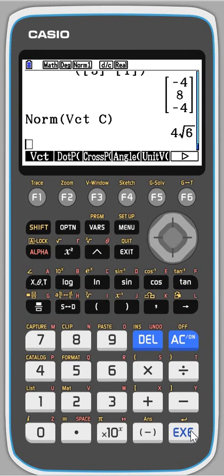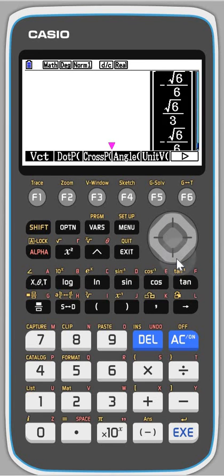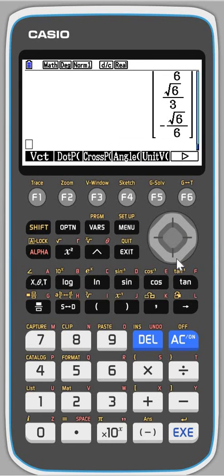You can get the angle between vectors and you can get a unit vector in the direction. So let's do unit vector, Vector C. And that gives you a scaled vector in the same direction as Vector C, but it has magnitude one.